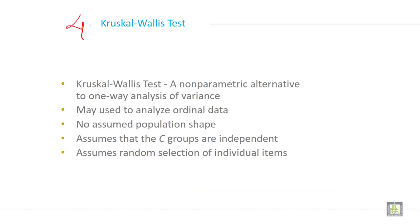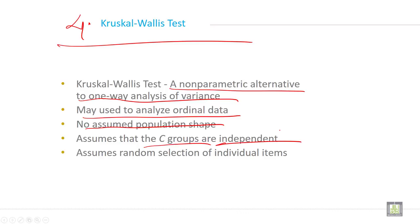Here is another test, you can say non-parametric test, Kruskal-Wallis test. Kruskal-Wallis test, a non-parametric alternative to one-way analysis of variance, may be used to analyze ordinal data. No assumed population shape. Assumes that the C groups are independent and assumes random selection of individual items.